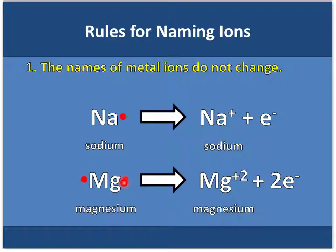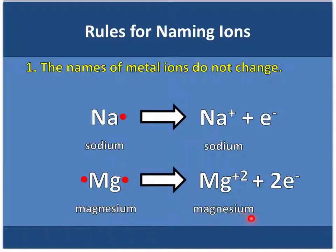Magnesium has 2 valence electrons — overall charge of 0. Magnesium loses 2 electrons, so it has a charge of positive 2. We have 2 electrons — that's 2 negative charge — and a plus 2, so plus 2 plus negative 2 gives an overall charge of 0. Notice the name of the ion does not change. Sodium is still sodium. Magnesium is still magnesium.